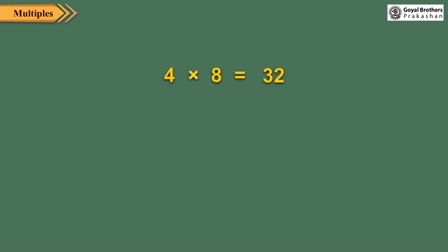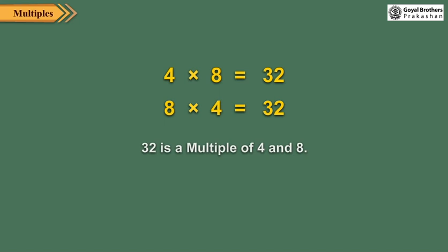4 multiplied by 8 is equal to 32, which implies 32 is a multiple of 4. Is 32 also a multiple of 8? Of course, yes, because 8 multiplied by 4 is equal to 32. Thus, when 2 or more numbers are multiplied, the product is a multiple of each of the numbers being multiplied.